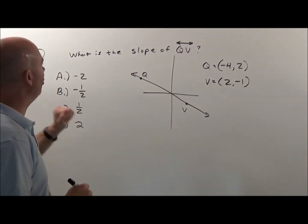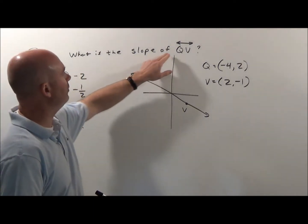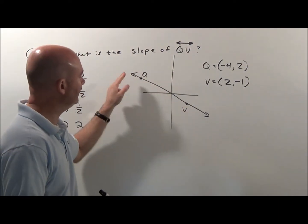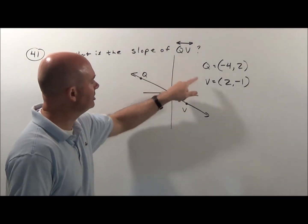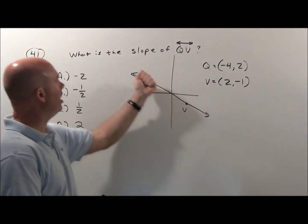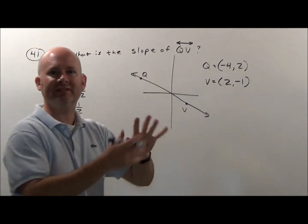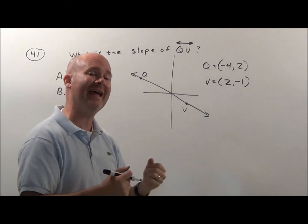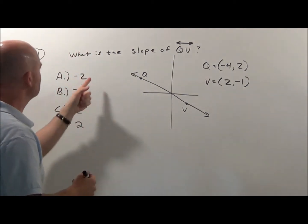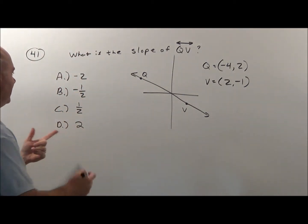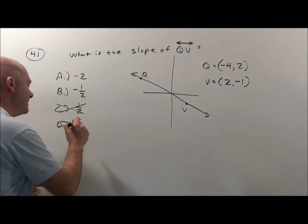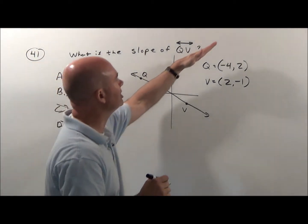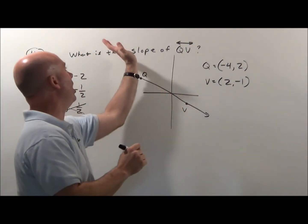All right, let's go with problem 41. What is the slope of line QV? Notice first of all, it gives us Q and V, but notice this line is going up to the left. Lines going up to the left have negative slope. So when I look at my options for what the slope is, it can't be C or D because those are positive. Positive slope goes up to the right, negative slopes go up to the left.